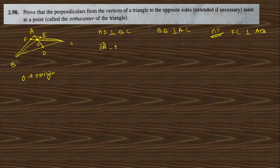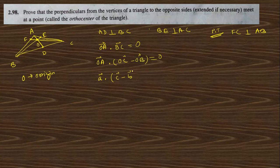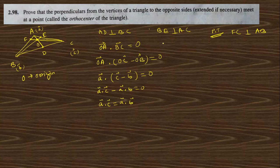Since AD is perpendicular to BC, OA dot BC equals zero. BC means OC minus OB, so OA dot (c - b) = 0, which gives a·c minus a·b equals zero. Therefore a·c equals a·b.